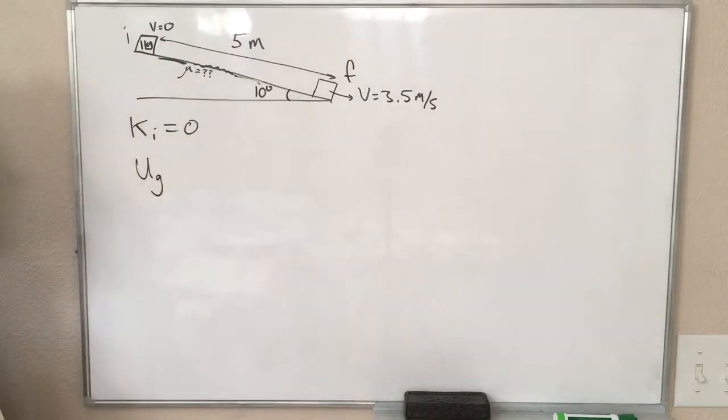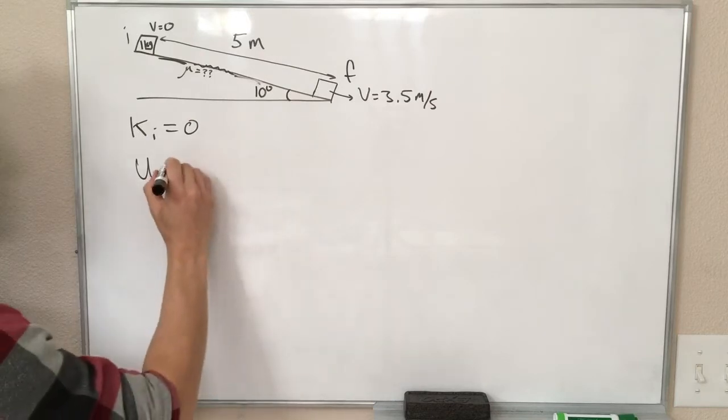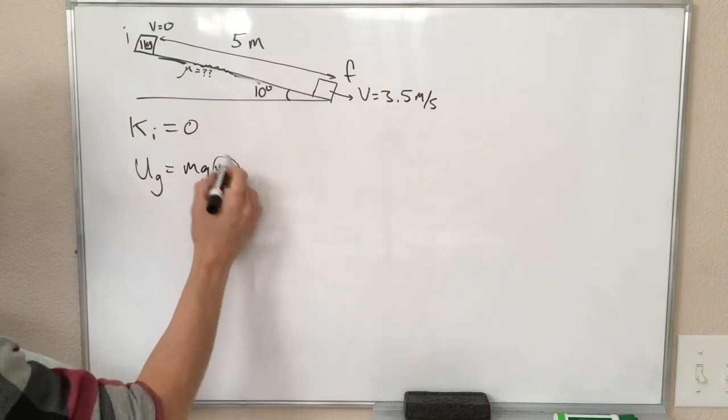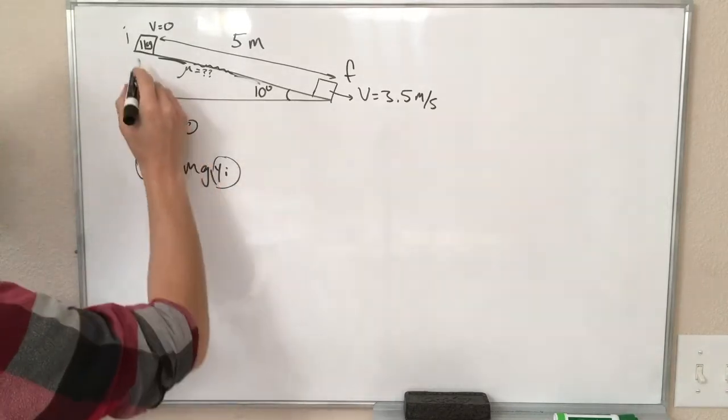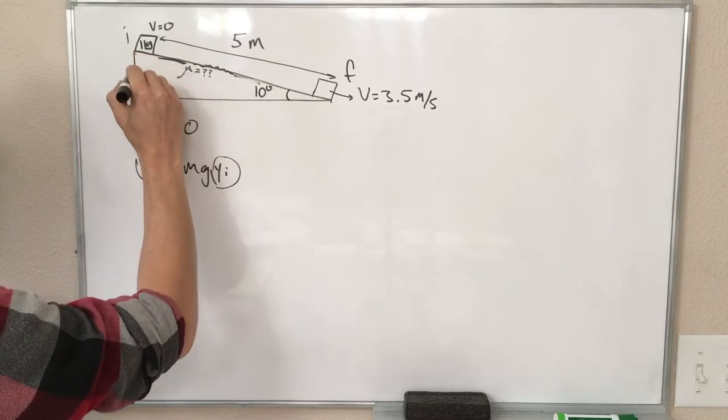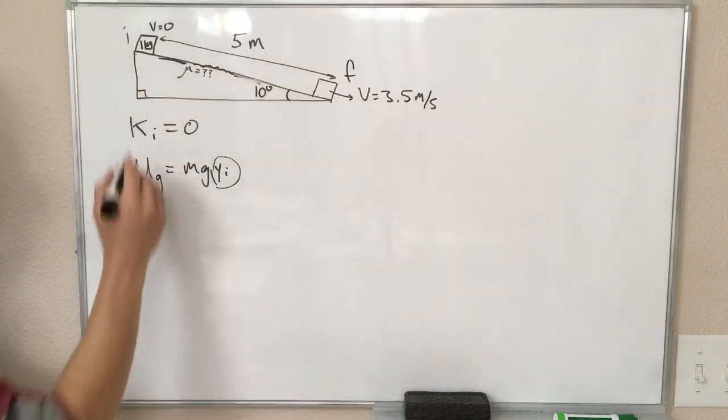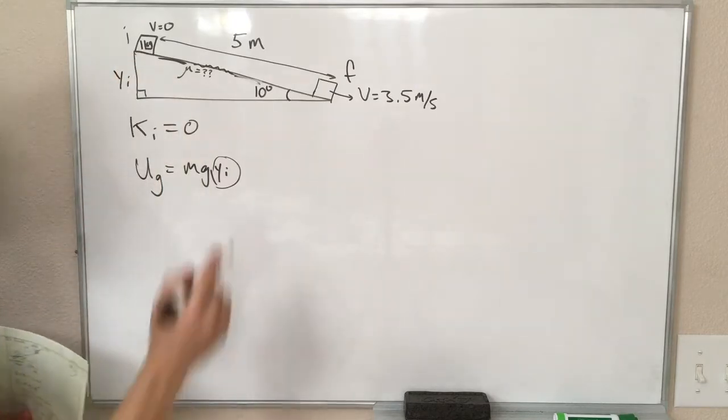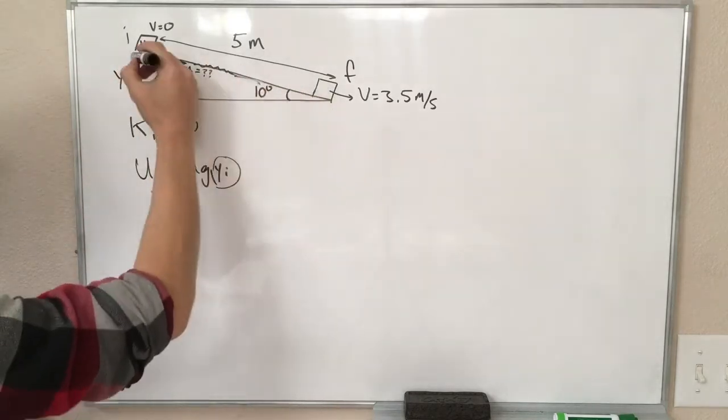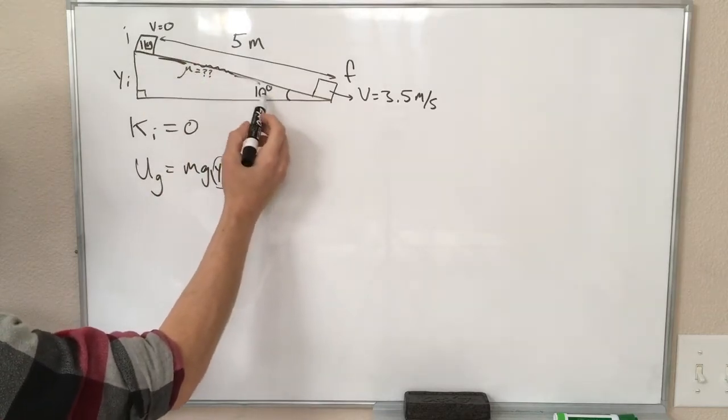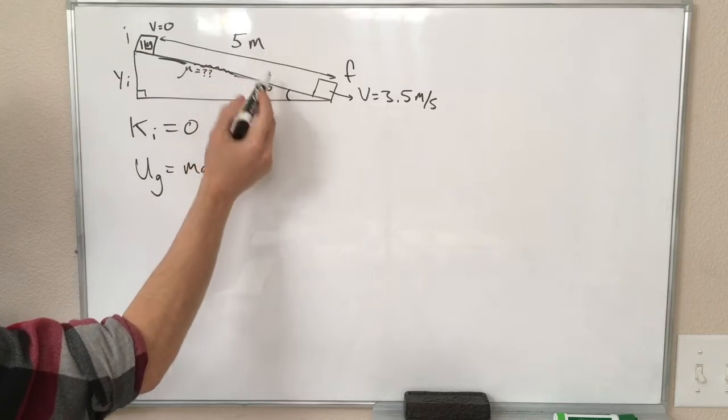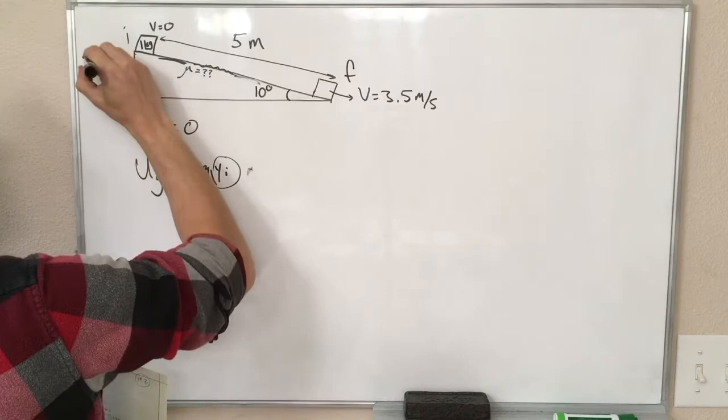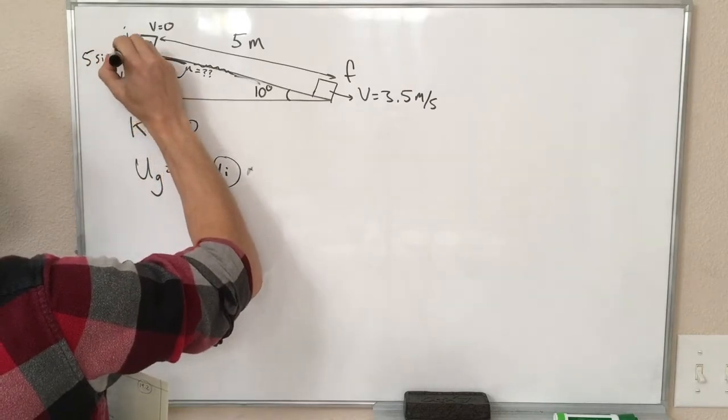Our block does have gravitational potential energy, and for this, this is mgy initial, we need to know how high it is above the ground, we're not given that, but we do know enough to figure it out, since that is like this side of this right triangle. This is the y initial, how far the block is off the ground. So that's going to be the side opposite our 10 degree angle, so that's going to be 5 meters, the hypotenuse, times the sine of 10 degrees. So y initial, 5 times the sine of 10 degrees.